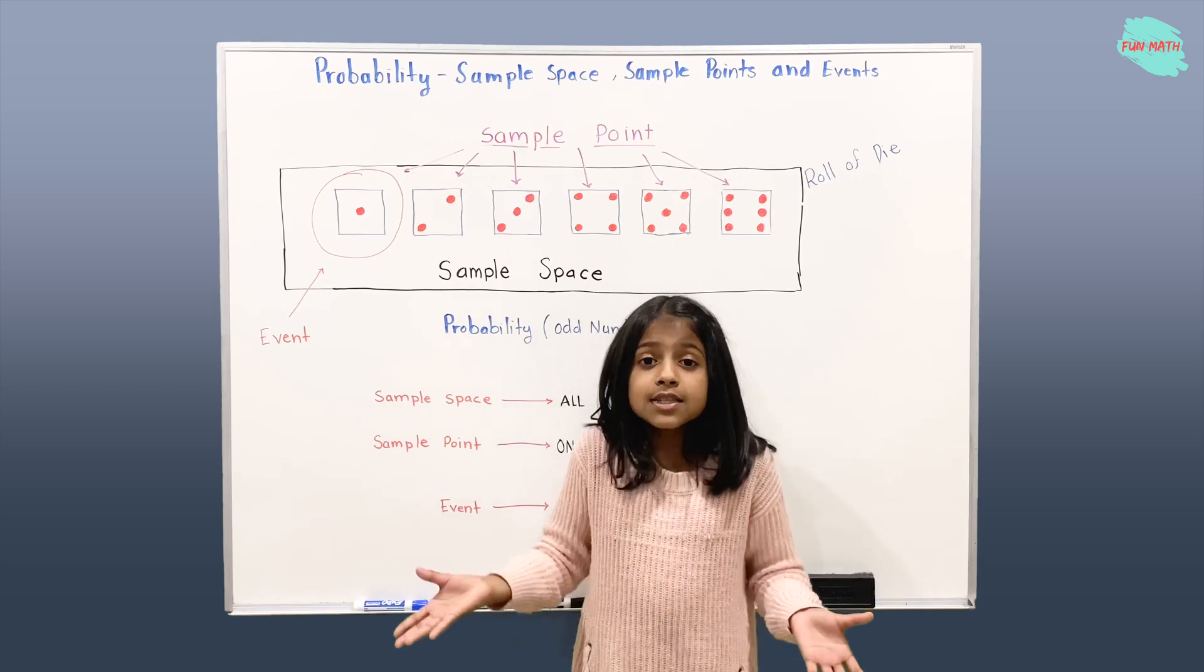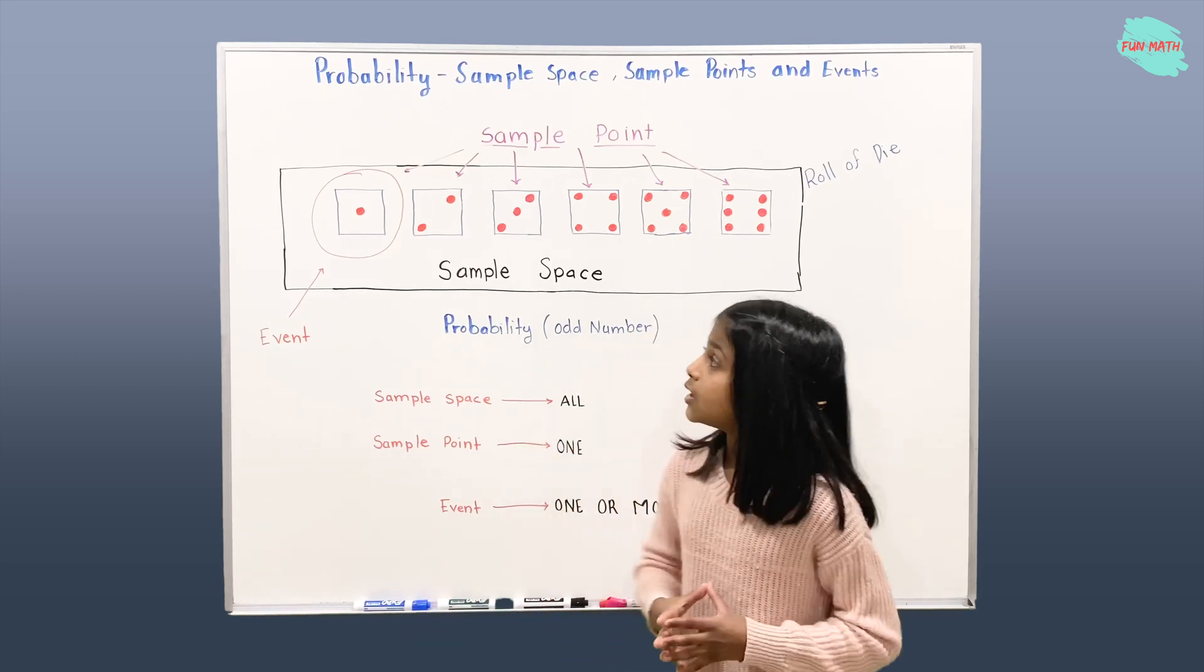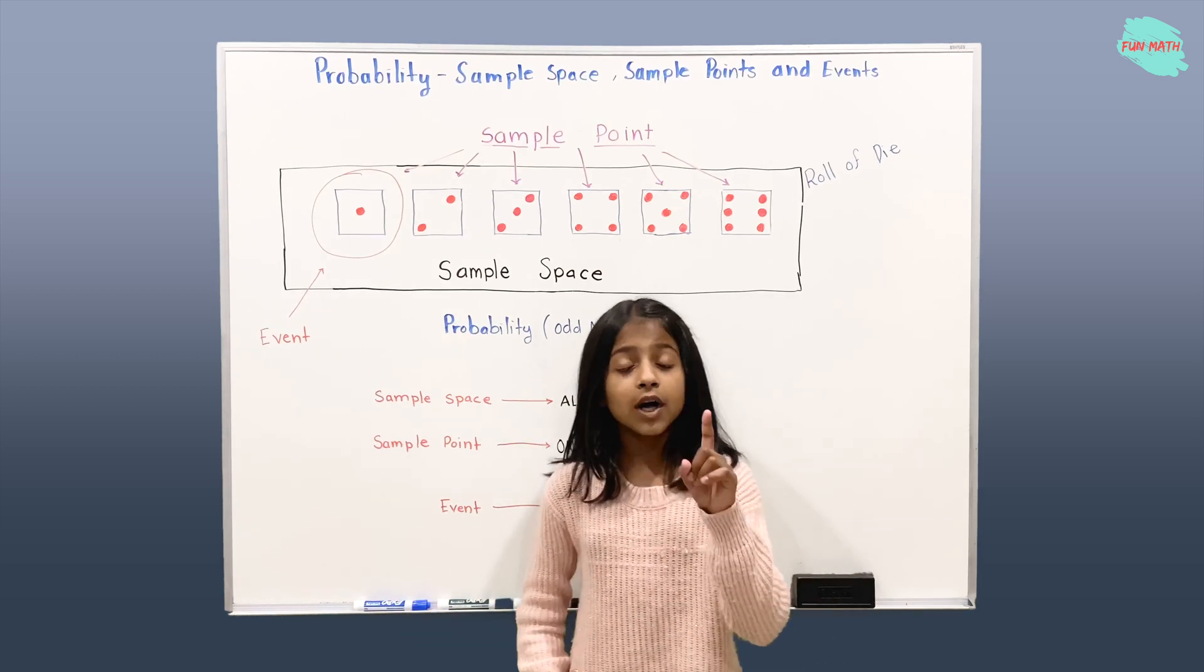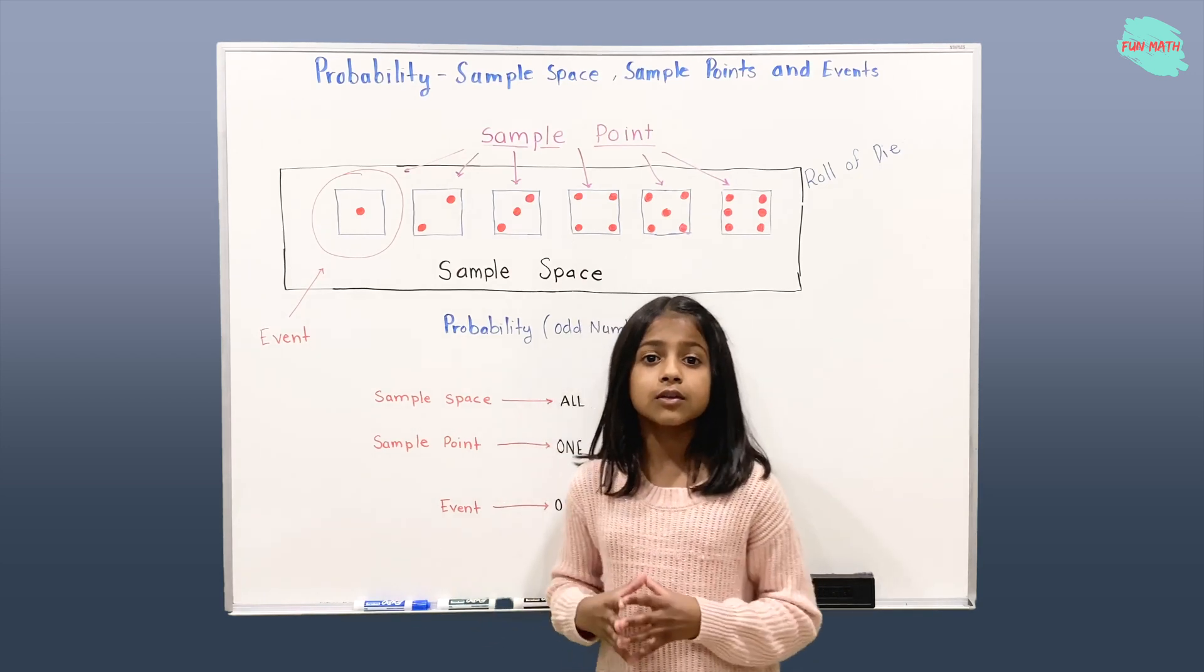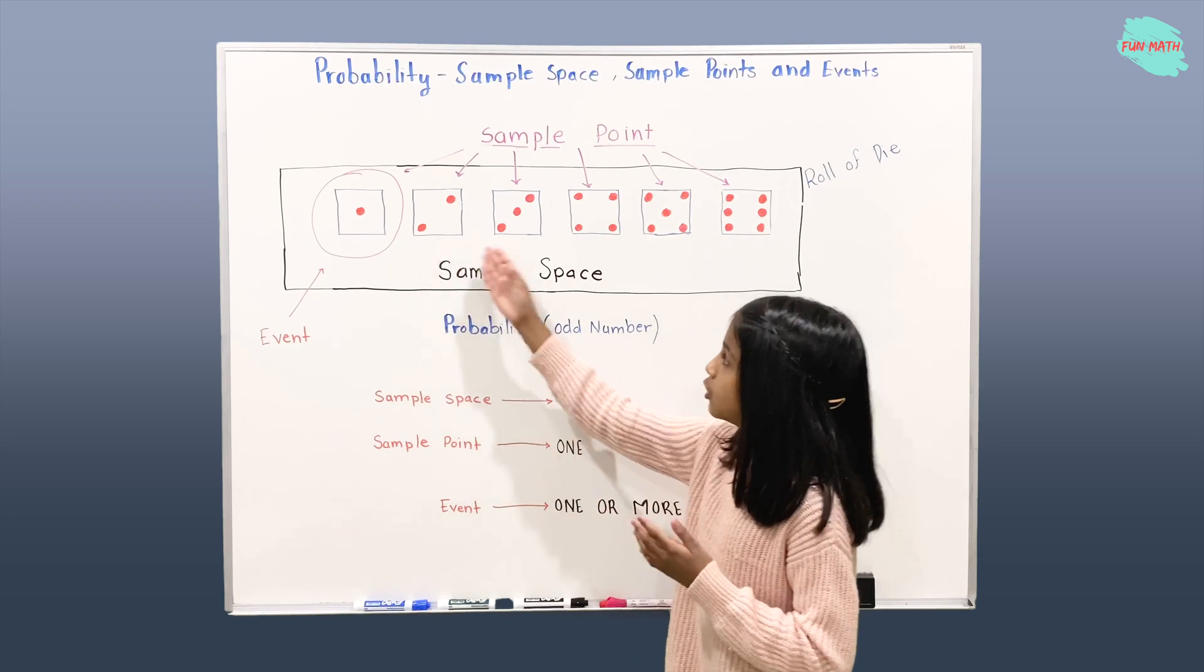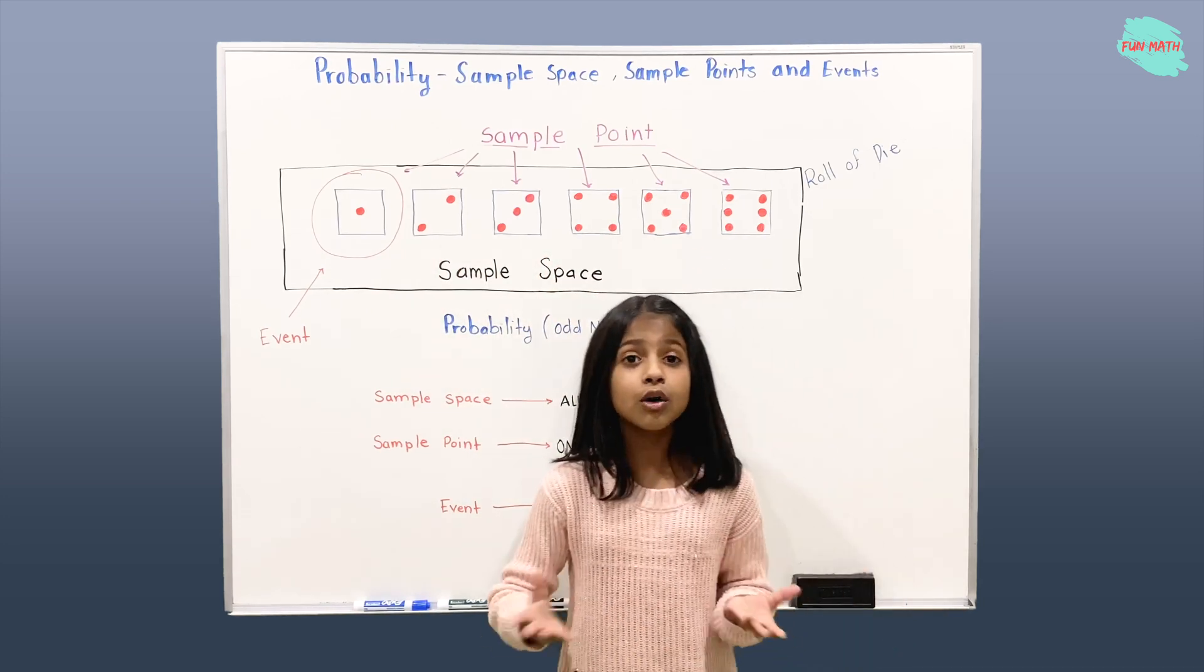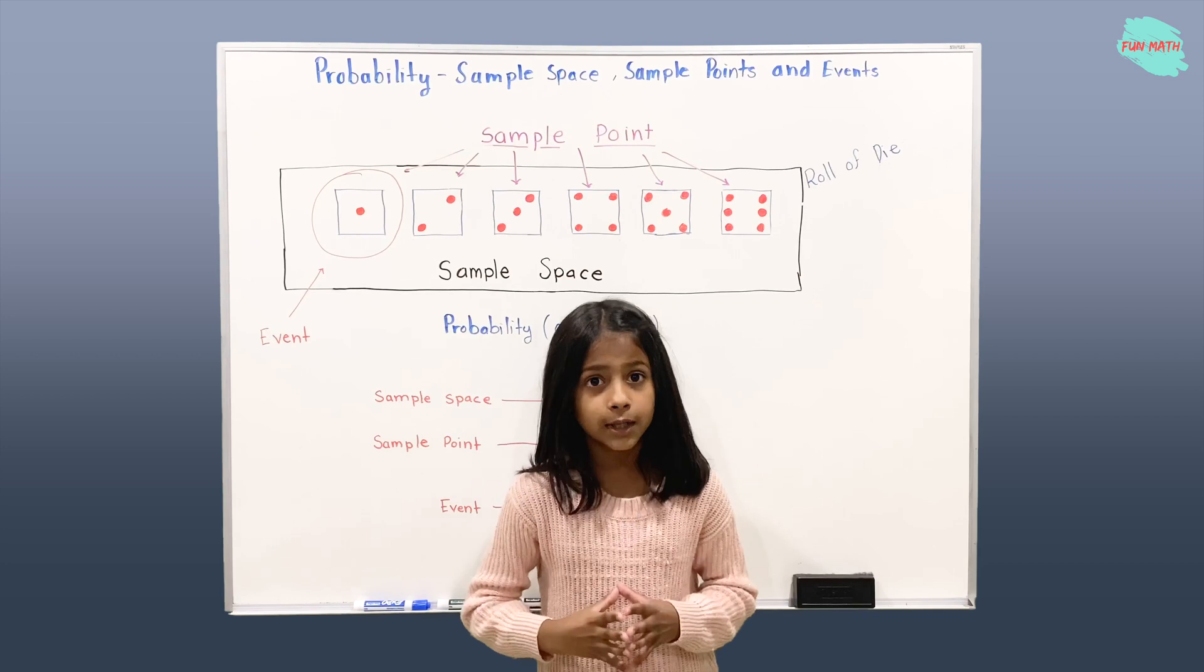So what is this sample point? Sample point is one of the outcomes of like 1, 2, 3, 4, 5, and 6. Those all can be one of the outcomes.